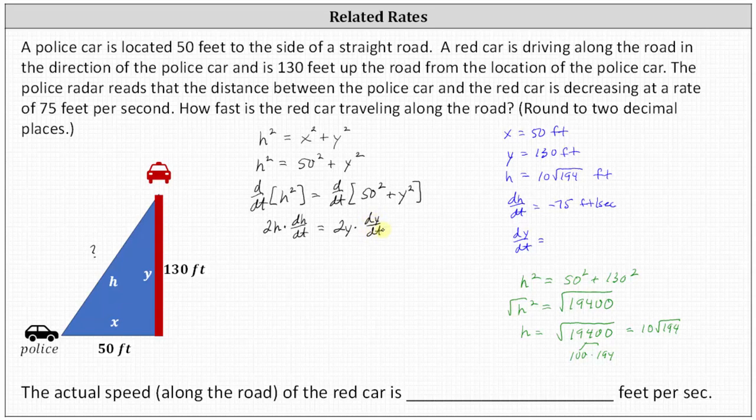Now remember here, our goal is to determine dy/dt. So now we'll solve for dy/dt by dividing both sides by 2Y. Simplifying on the right, 2Y divided by itself simplifies to 1. And on the left, 2 divided by 2 simplifies to 1. So the equation is dy/dt equals H divided by Y times dH/dt.